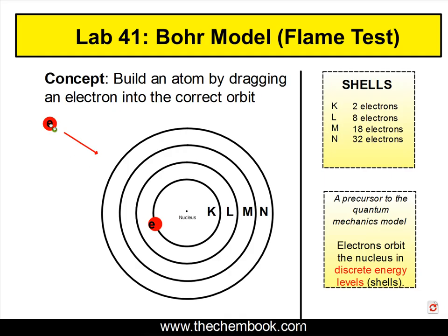What happens is if we take an electron that would normally be sitting here — let's say we have something like lithium, and lithium would normally be sitting like this — what happens if we kick off an electron and it goes to another level? Well, at this point we have put energy into the system. So when the electron comes back down to this level, that excess energy is going to come off in the form of light.